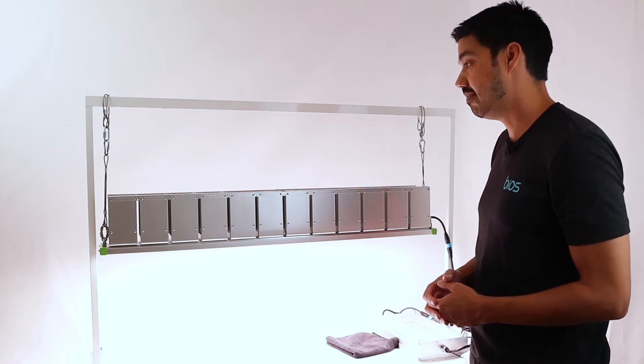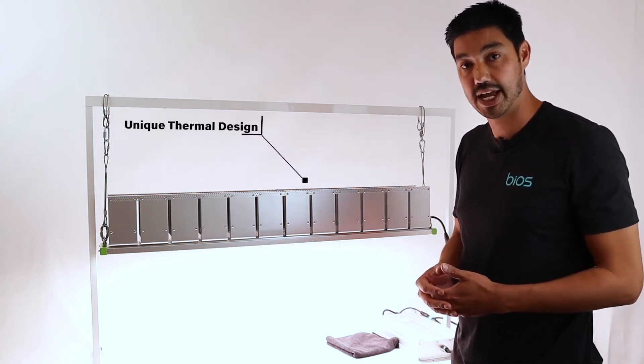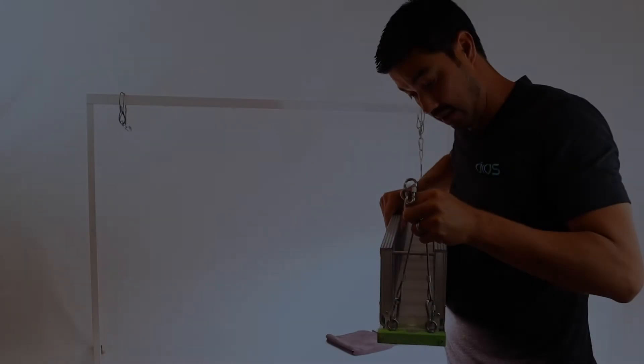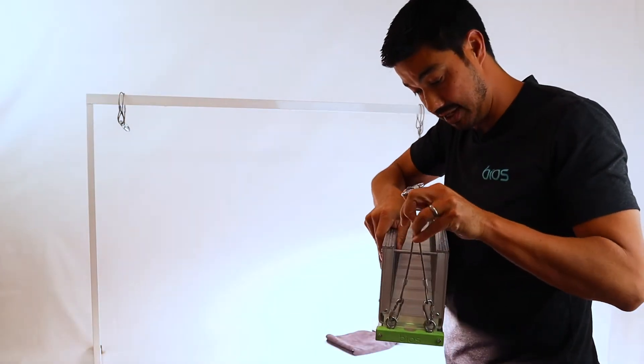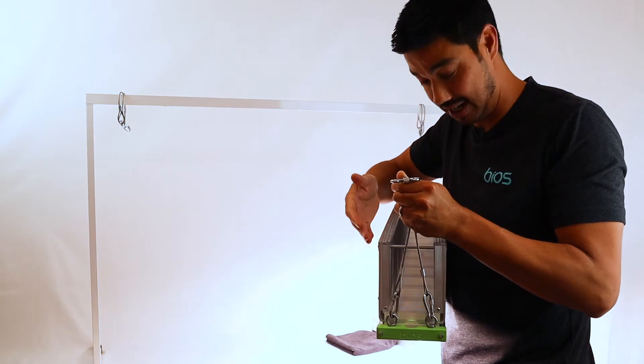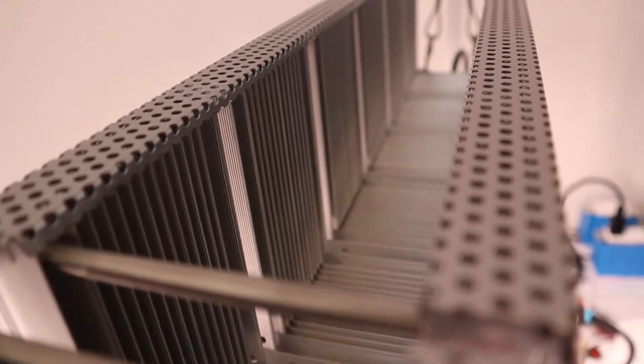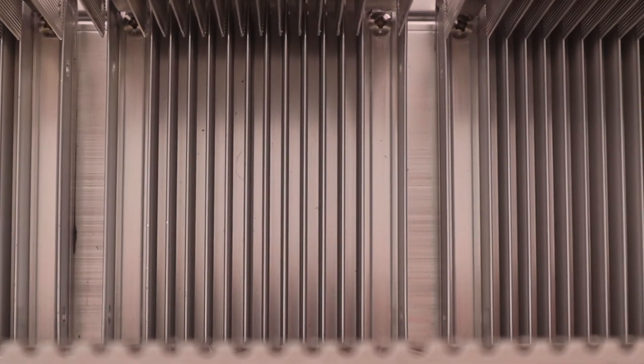One of the things that makes this ideal for greenhouse applications is our unique thermal design. What we have is what looks like a hollow heat sink, but it's actually an active cooling mechanism, a heat pipe that goes up the sides.